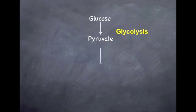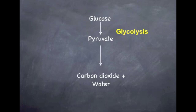The pyruvate is then broken down into carbon dioxide and water. This stage produces 34 ATP and takes place in the matrix of the mitochondrion, so in total you achieve 36 ATP from aerobic respiration.